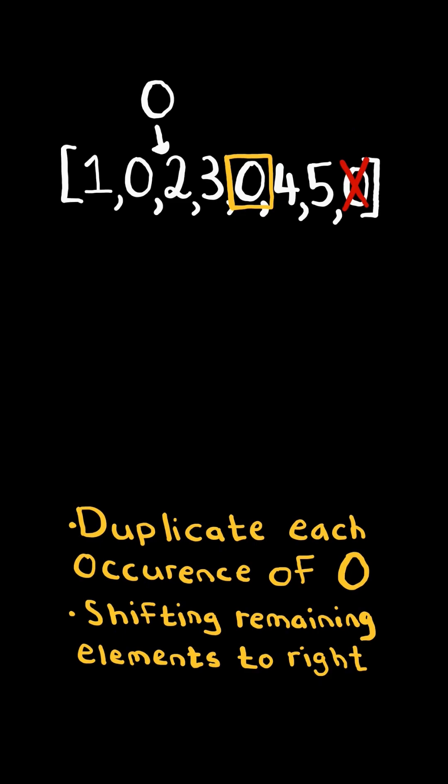Again, we find the next occurrence of zero, we duplicate the zero, and make space for it by shifting the elements to the right, and this removes the last element.